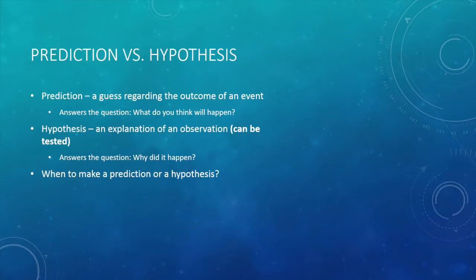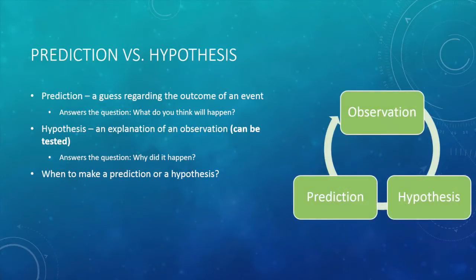Now the question becomes: when do you make a prediction, and when do you form a hypothesis? Predictions and hypotheses are connected in a continuous cycle. First, we make an observation. Based on this observation, we form a hypothesis. Before we test our hypothesis, we make a prediction about the outcome of the experiment based on our hypothesis. When we test our hypothesis, we make an observation again, and the cycle continues.